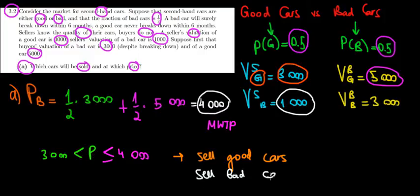He's going to sell the bad cars as well. Notice that because of this information asymmetry, the buyer does not actually know for sure what car he's going to get. He might get a good car, he might get a bad car, but the idea is that as long as the price is in this range, then both types of cars are going to be sold.